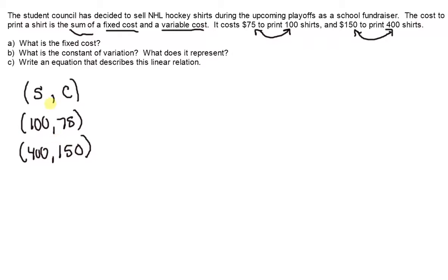So what is the fixed cost, and what is the constant of variation, and what does it represent? These two are really tied into each other, because we're going to find them and then write an equation that describes this linear relation.